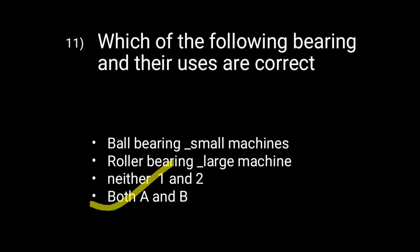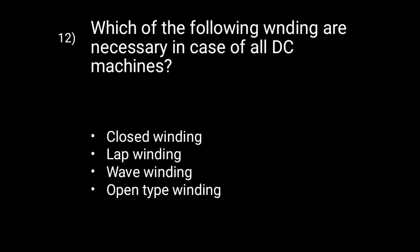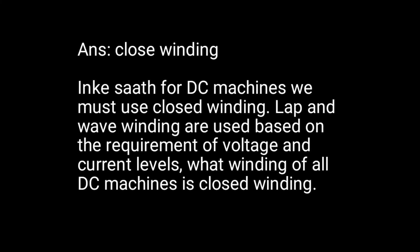Question 12: Which winding is necessary in all DC machines? In all DC machines, we must use closed winding. Option A, closed winding, is correct. Lap and wave winding are used based on the requirement of voltage and current levels, but the basic winding of all DC machines is closed winding.